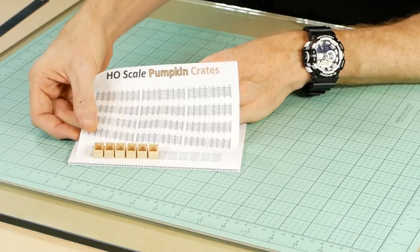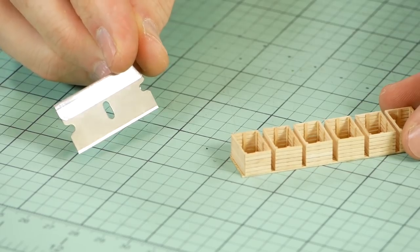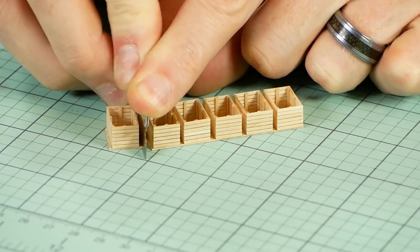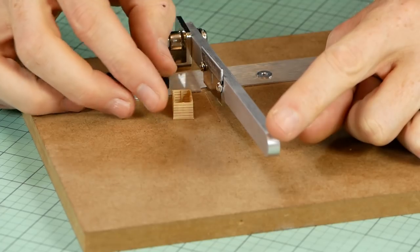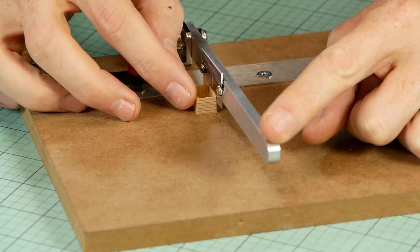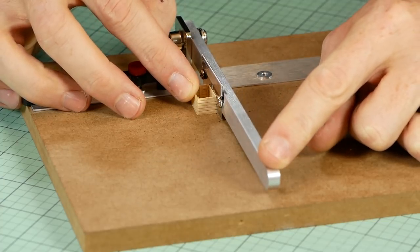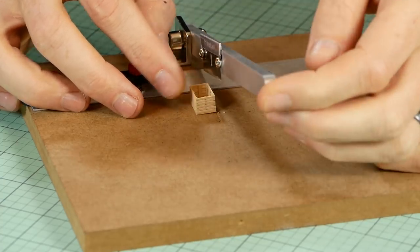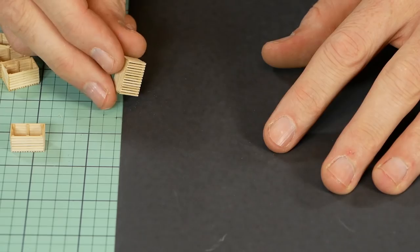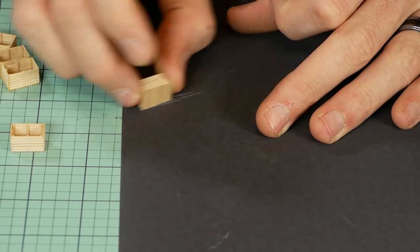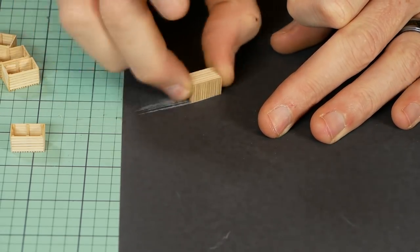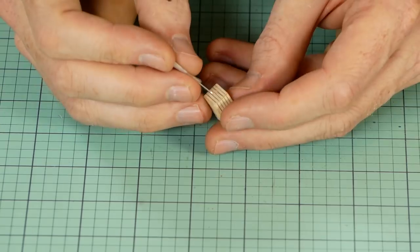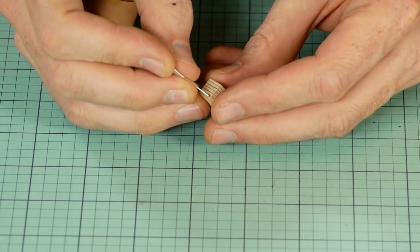With all the crates glued you can then separate them with a blade and then remove any excess from the sides. It's not always necessary, but if required you can tidy up the edges of each crate using sandpaper and add additional nail holes as appropriate.